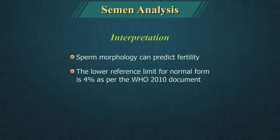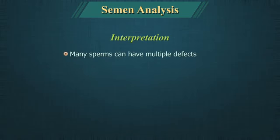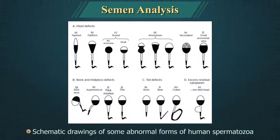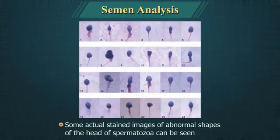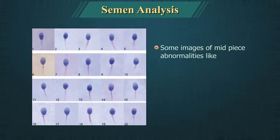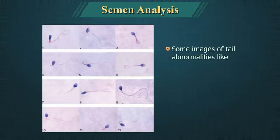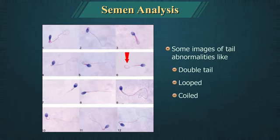The lower reference limit for normal forms is 4% as per the WHO 2010 document. Many sperms can have multiple defects; the average number of defects per sperm is called the Teratozoospermic index, which is a significant predictor of sperm function. Images show schematic drawings and actual stained images of abnormal sperm head shapes, midpiece abnormalities such as thick, bent, too long or irregular, and tail abnormalities such as double tail, looped, coiled, bent, etc.